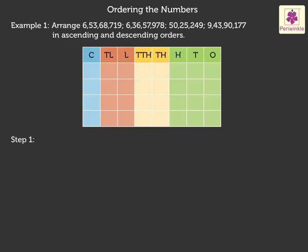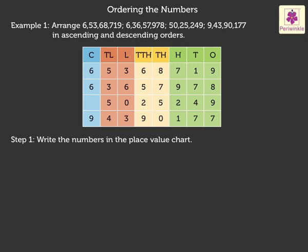Step 1. Write the numbers in the place value chart. Out of the 4 given numbers, 3 numbers have 8 digits. Whereas, 1 number has 7 digits.